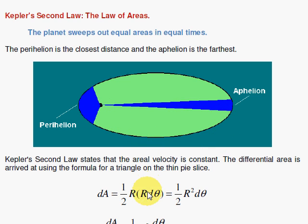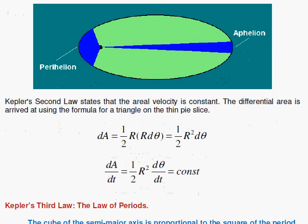So here I've set up the differential area element here for a small piece where I have r d theta. And this is r. So the area is one half the base times the altitude. Triangle formula, one half r times r d theta. One half r squared d theta. Kepler's second law says in this differential form, calculus form, that the change in the area with respect to time is equal to a constant.